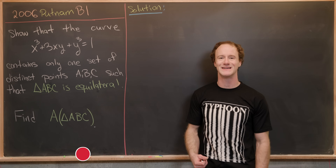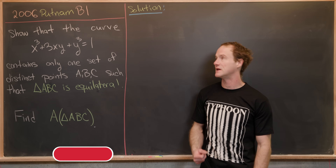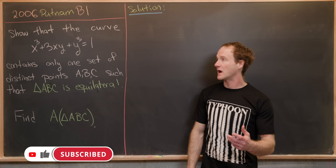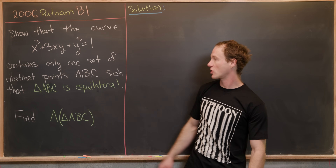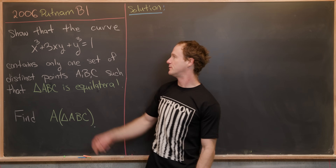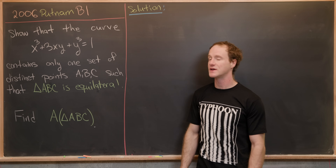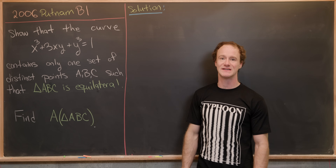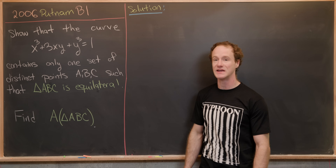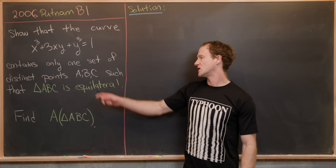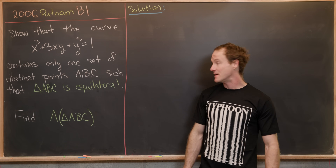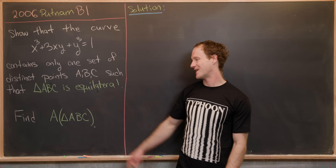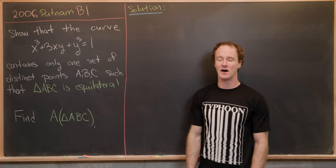Here we're going to look at a problem from the 2016 Putnam exam. This is question B1 and our goal is to show that the curve x³ + 3xy + y³ = 1 contains only one set of distinct points A, B, C such that triangle ABC is equilateral. Our secondary goal is to find the area of this triangle.